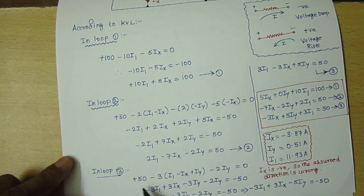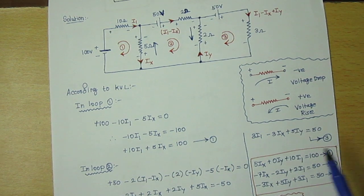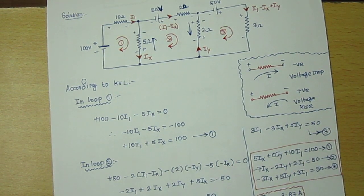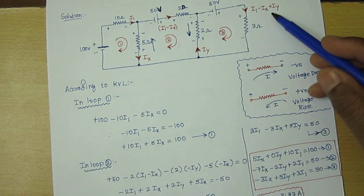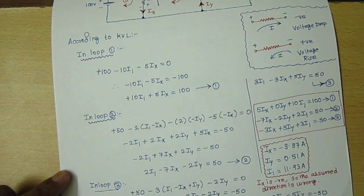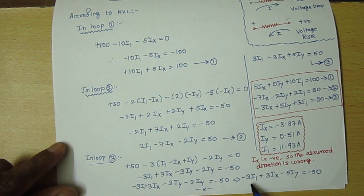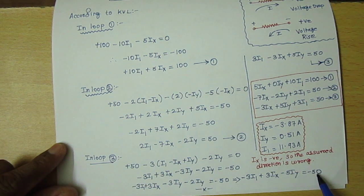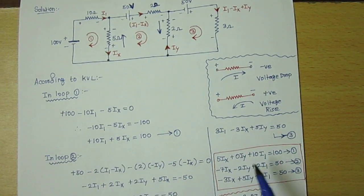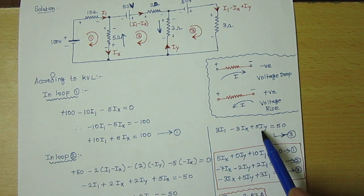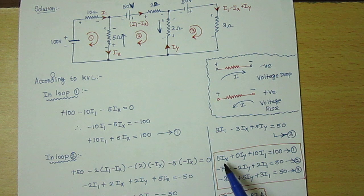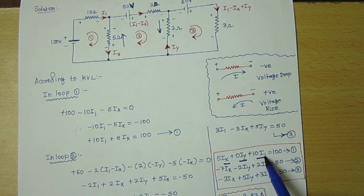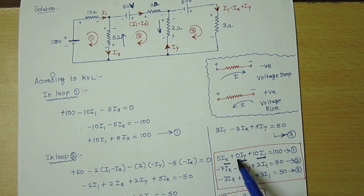For loop 3, applying KVL: +50 − 3(I1 − Ix) + Iy = 0. Simplifying gives −3I1 + 3Ix − 5Iy = −50, which we rearrange to 3I1 − 3Ix + 5Iy = 50. This is equation 3. Arranging all three equations in terms of I1, Ix, and Iy — noting that Iy does not appear in equation 1 so we write 0·Iy there.